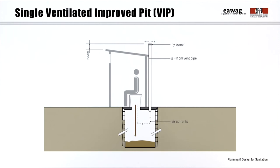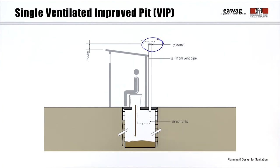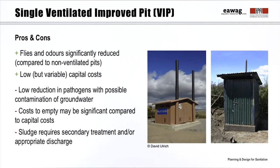Besides removing odors, another beneficial effect is that flies that hatch in the pit are attracted to the light at the top of the ventilation pipe. With a semi-dark superstructure, flies fly toward the light in the pipe. A fly screen or mesh at the top of the pipe traps them and prevents them from escaping. The attraction for flies from the outside is also minimized because odors are allowed to escape. A good ventilation effectively prevents odors and is able to reduce the fly problem and the spread of diseases they may carry.